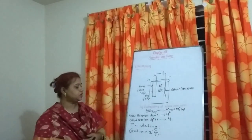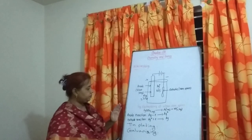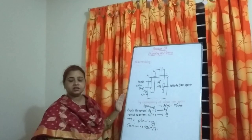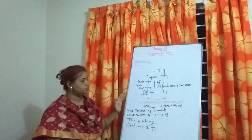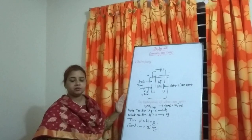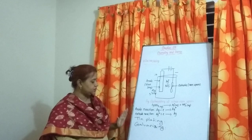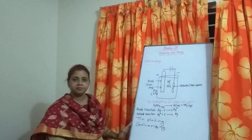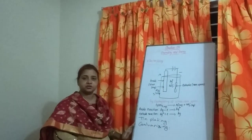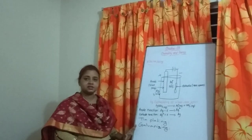So today I have finished electrolysis of molten sodium chloride, electrolysis of brine, electrolysis of acidified water, electroplating, tin plating, and galvanizing. Next class, I will show you nuclear reaction. Thank you.